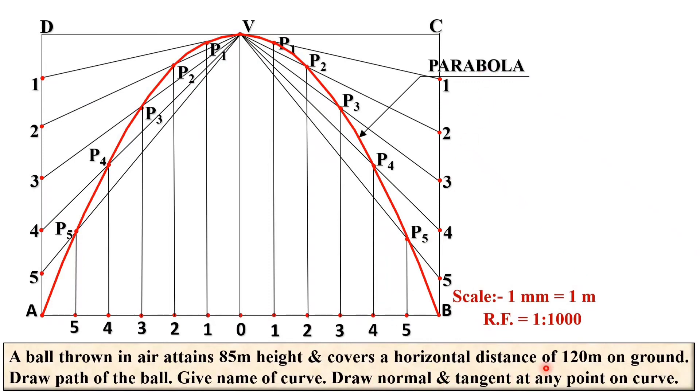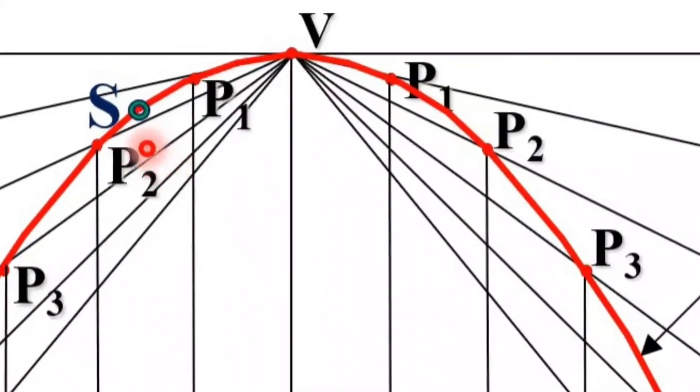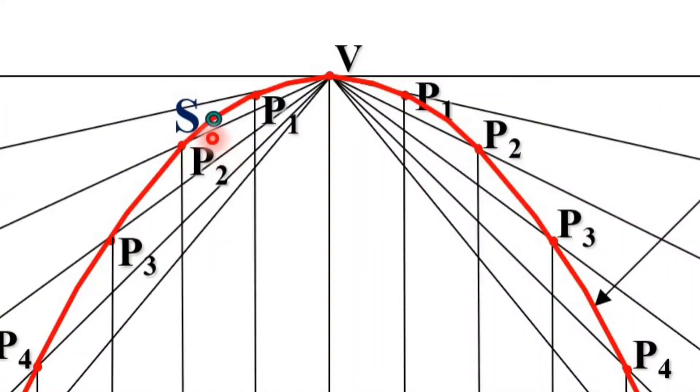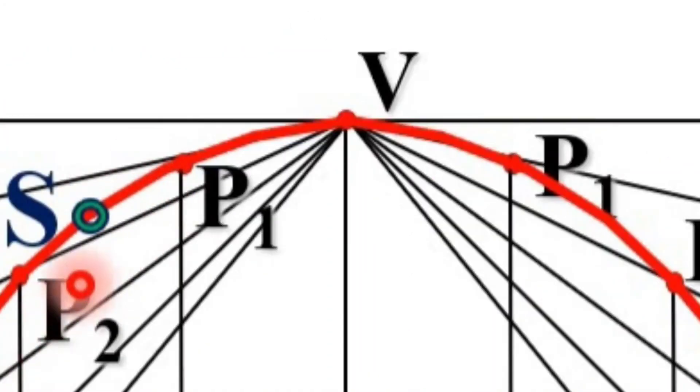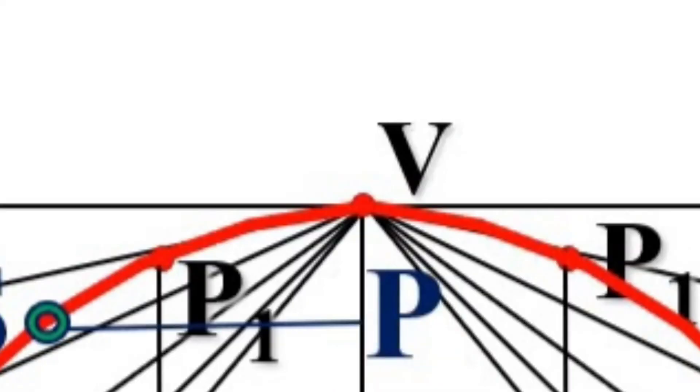Third one, draw the normal and tangent at any point on the curve. Now let us take one point on the parabola, give the name as S where I want to draw the normal and tangent. First of all, draw the horizontal line passing through this S up to this mid line. You will get the intersection point over here, give the name as P. Now extend this PV line in the upward direction. Take initially length randomly.